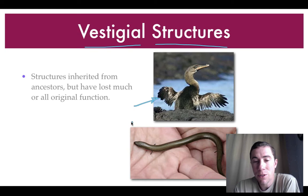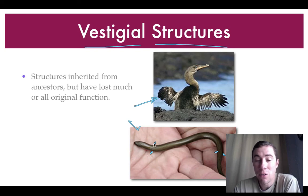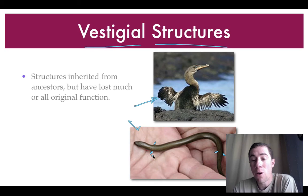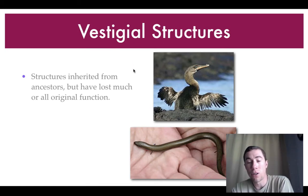Down here we have what's known as the three-toed skink. If you look closely, you can actually see what appear to be four limbs. This skink's ancestors stopped using those limbs generations ago, and now they are just left over. These are called vestigial structures.